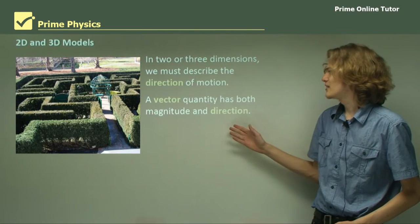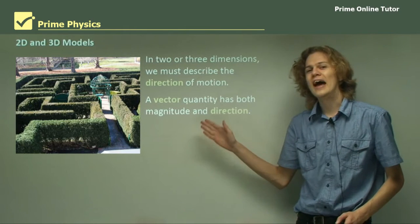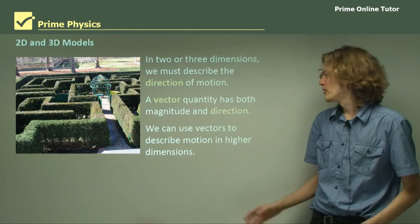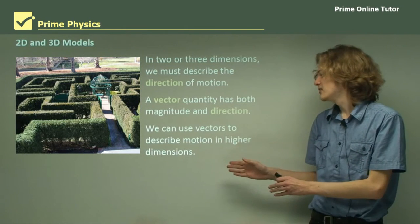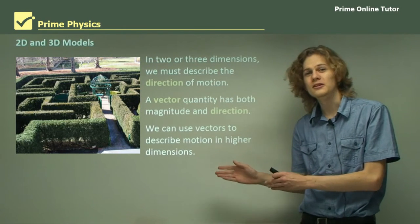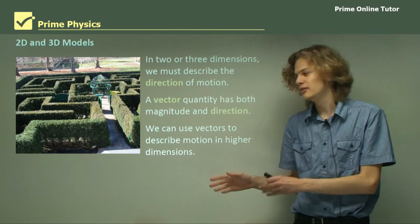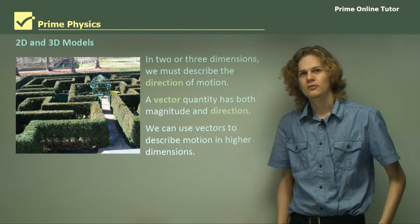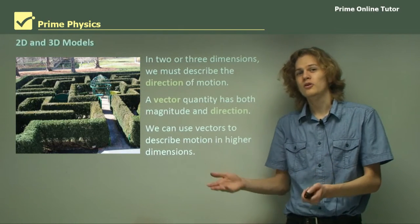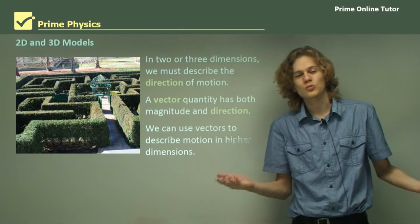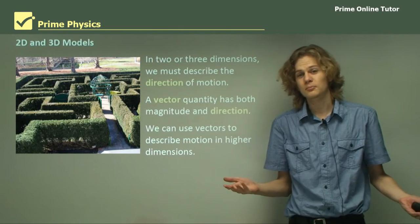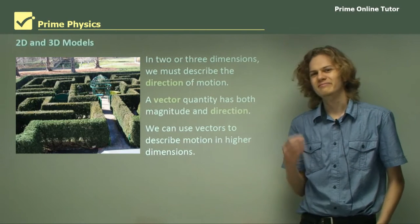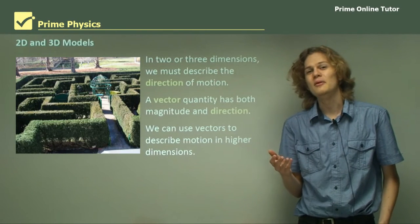A vector quantity has both magnitude and direction, and so we can use vectors to describe motion in higher dimensions. If we're just in one dimension, we can use scalars, which is simpler, but doesn't give as much information.